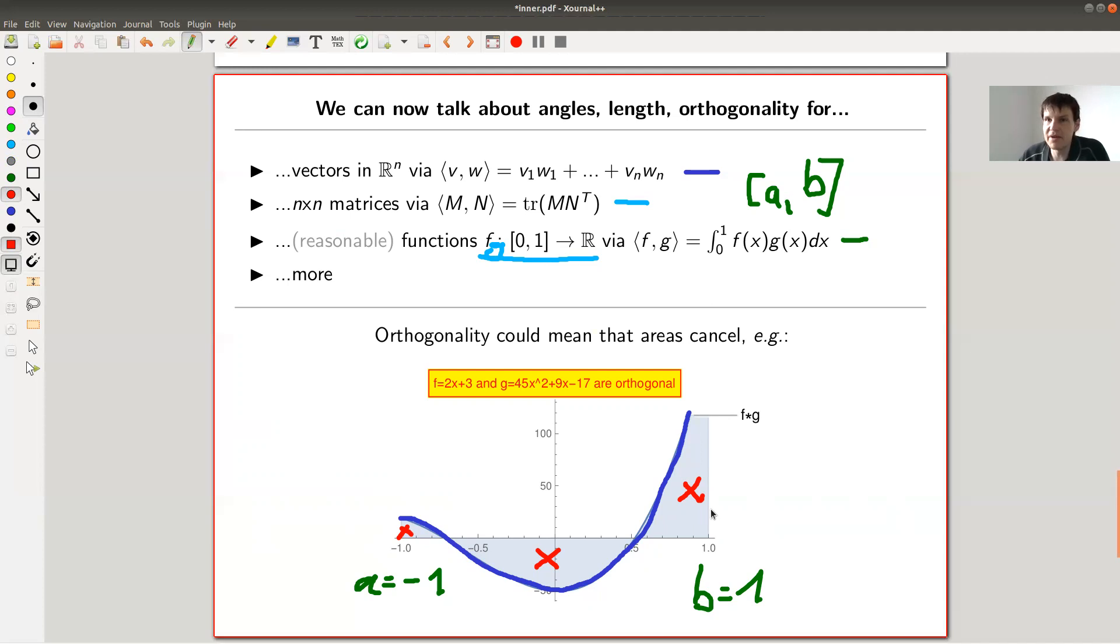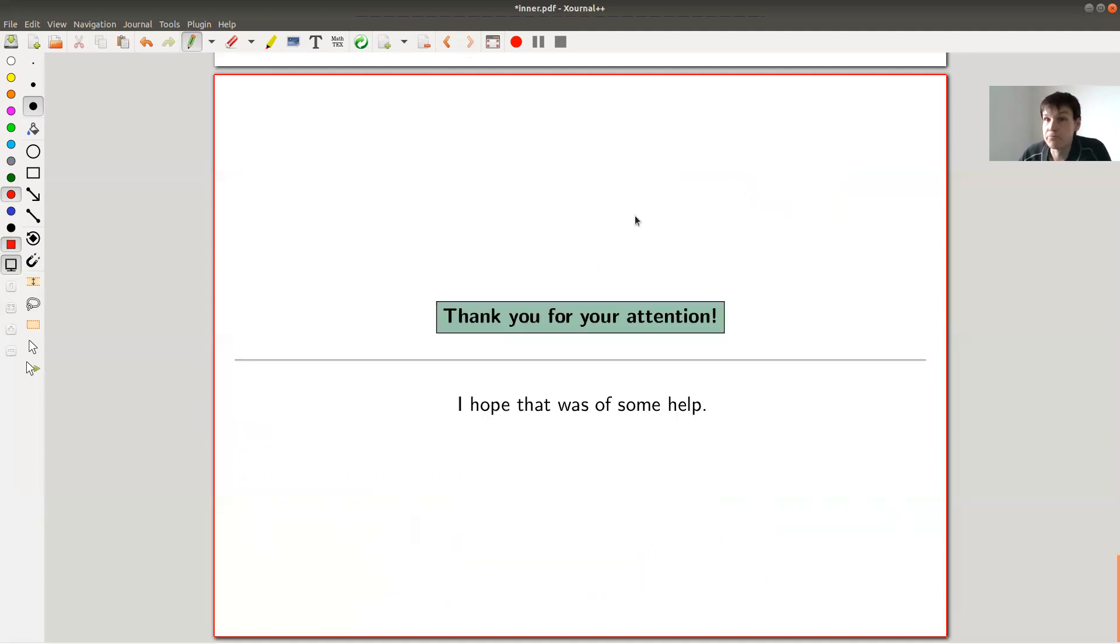Okay, so take away message, inner product is just generalization of standard measuring of angles in whatever R3, R4, R2, whatever you like, and you can just then apply it to various contexts, like functions, which is pretty cool. Okay, thank you very much, and hope to see you next time.